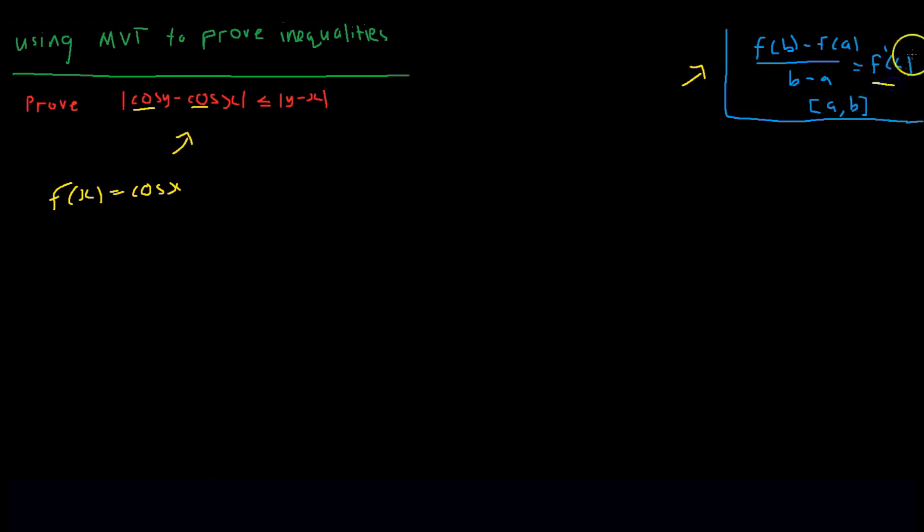As you know, in the Mean Value Theorem there's a derivative, so we want to differentiate the function. We get f prime of x is negative sin of x. Now we have our f of x and f prime of x.